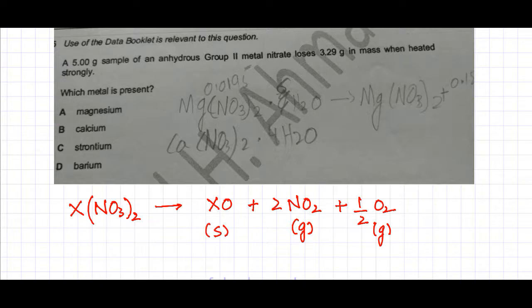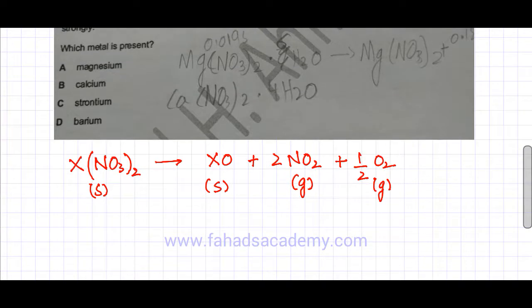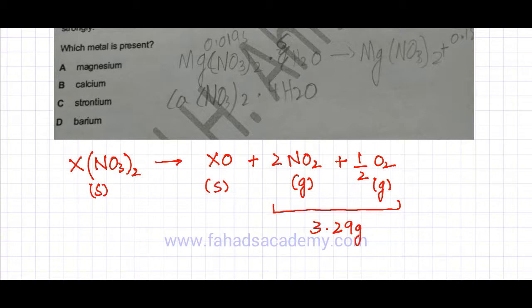So 3.29 grams is the mass that is lost. That means it's the mass of the gas that has been produced. So 3.29 grams is the mass of the gas. These are the solid substances, and since it's anhydrous there's no water involved so no water vapors would be formed. If you initially had a 5 gram sample and it loses 3.29 grams, the amount of mass that is still present in solid form is 1.71 grams.